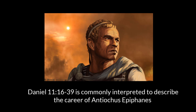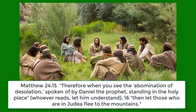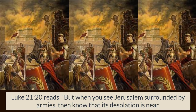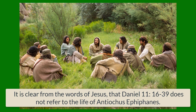Daniel 11:16-39 is commonly interpreted to describe the career of Antiochus Epiphanes. However, Jesus warned the disciples that the abomination that makes desolate was an event future to his time. Matthew 24:15 reads, Therefore, when you see the abomination of desolation spoken of by Daniel the prophet standing in the holy place, whoever reads, let him understand. Then let those who are in Judea flee to the mountains. And in Luke, Jesus identifies the abomination of desolation as being the Roman armies. Luke 21:20 reads, But when you see Jerusalem surrounded by armies, then know that its desolation is near. It is clear from the words of Jesus that Daniel 11:16-39 does not refer to the life of Antiochus Epiphanes.